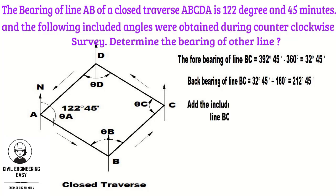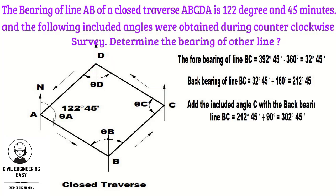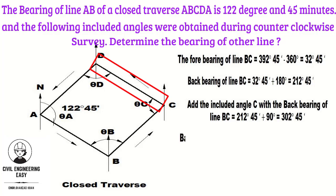To find the forebearing of CD, add the included angle Theta C — that is 90 degrees — with the backbearing of line BC. The forebearing of CD equals 212.45 min plus 90 degrees. The answer is 302.45 min, which is the forebearing of line CD.